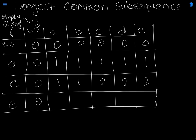For the next row, E and A: we take the max of 0 and 1, which would be one. E and B — the max is one. E and C — the max is two. E and D — the max is two. And now E and E are a match, so it increments to three.